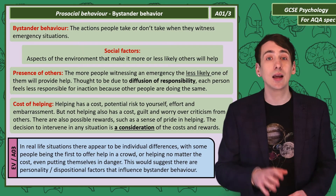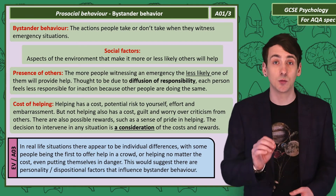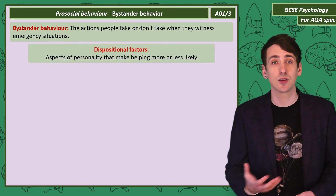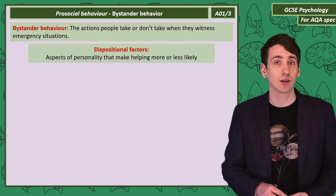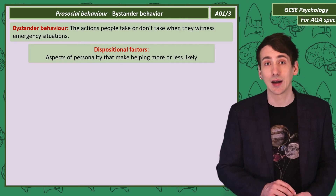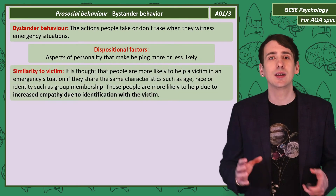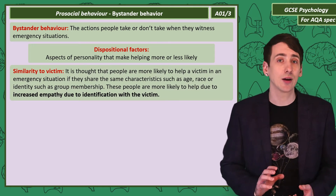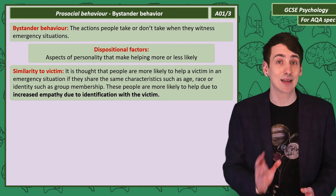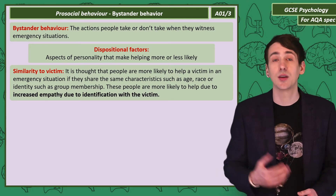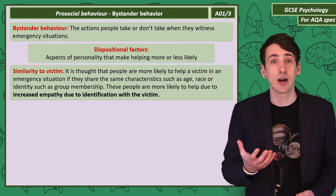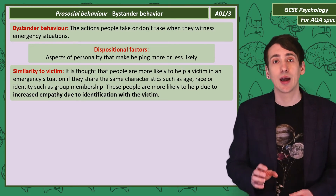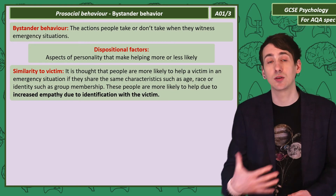It's likely there are dispositional differences in the personalities of these people. Dispositional factors are traits or personality factors of individuals that make them more or less likely to help. Firstly, similarity to the victim — it's thought that the more characteristics you share with someone who needs help, the more likely you are to help them. This can include things like similar age, race, or group membership, such as supporting the same sports team. It's likely because identifying with them increases your empathy towards them.